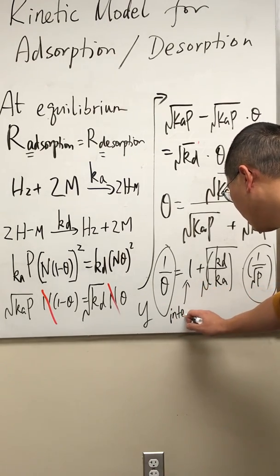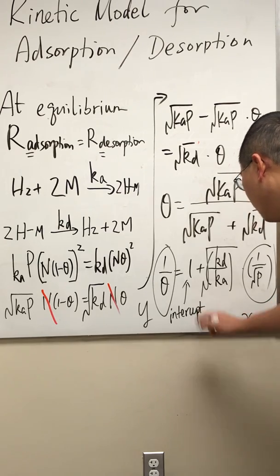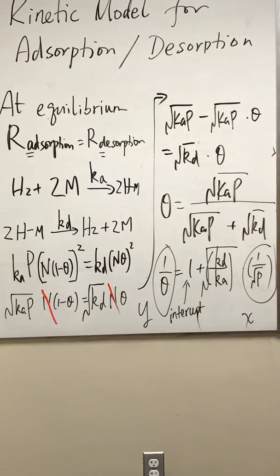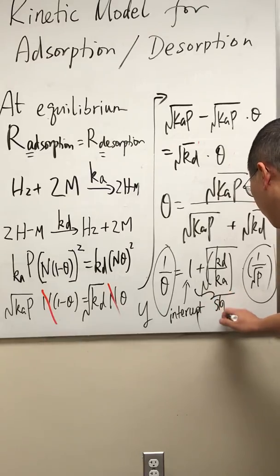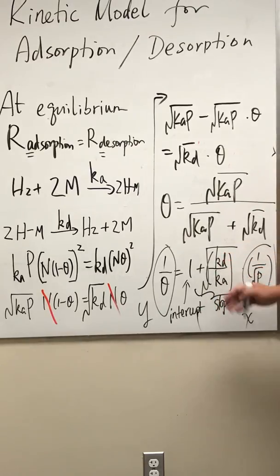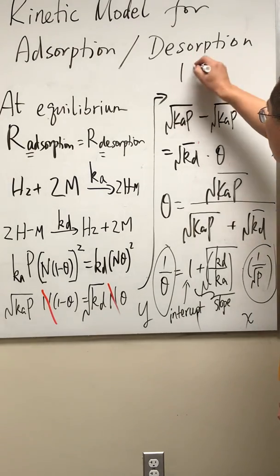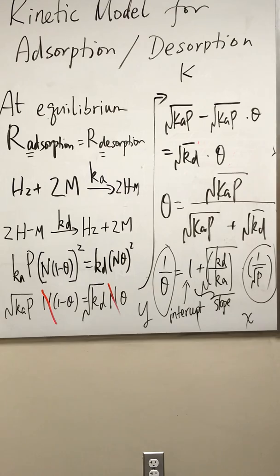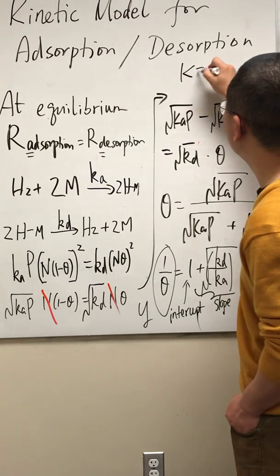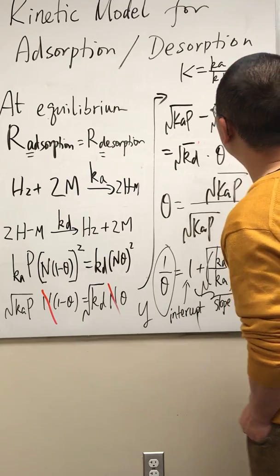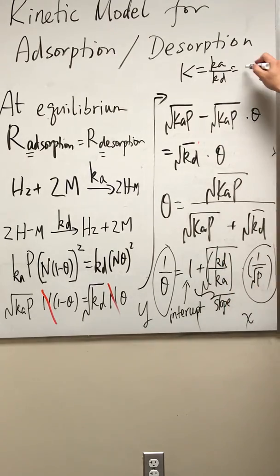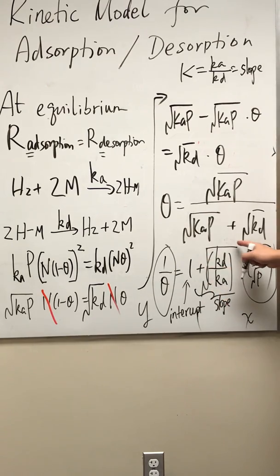And I predict that you will see the intercept value 1, and then over here that's your slope. The slope is the square root of kd over ka. By convention, we define the equilibrium constant for adsorption slash desorption to be ka over kd. So this guy is actually the slope you get. And the slope here is the square root of kd over ka, so it's the slope to the power of negative 2. Done. So there we go.